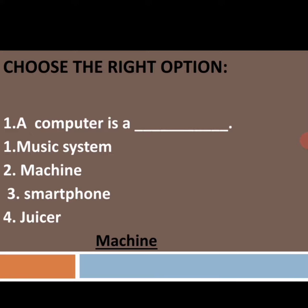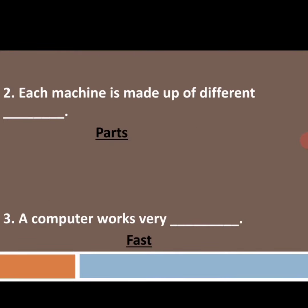First one: a computer is a ___. See the options here — music system, machine, smartphone, juicer. The right answer is machine. A computer is a machine. Make the tick mark for machine. Next, the second one: each machine is made up of different ___. Each machine is made up of different parts, so make the tick mark for parts.